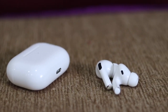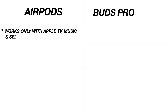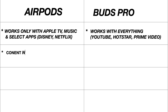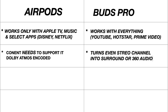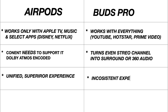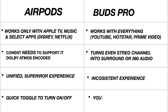Let me start with a quick comparison with the AirPods Pro spatial audio. Spatial audio on AirPods only works with selected apps, whereas the Buds Pro tries to work with almost all apps. Also, AirPods content needs to be Dolby Atmos encoded, whereas the Buds Pro tries to turn even stereo channels into a virtual surround sound. As a result, you get a more unified experience on the AirPods, but a bit more inconsistent one on the Galaxy Buds Pro. Also, you have a quick toggle on the AirPods, whereas on the Buds Pro you need to dig into the app — which is a downside.